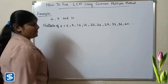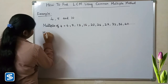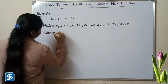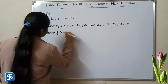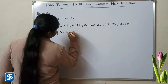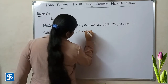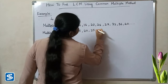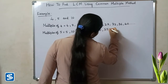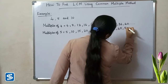So now we have to find the multiples of 5. Multiples of 5 are: 5 ones are 5, 5 twos are 10, 5 threes are 15, 5 fours are 20, 5 fives are 25, 5 sixes are 30, 35, 40, 45, 50, and so on.